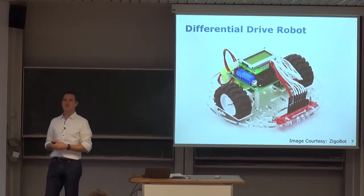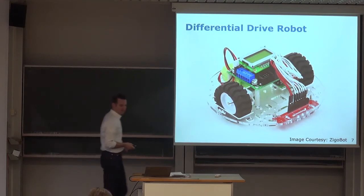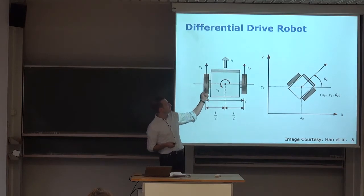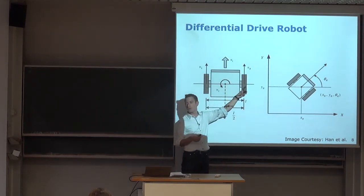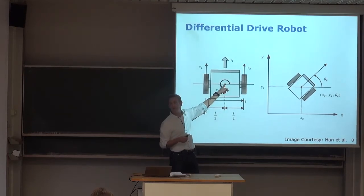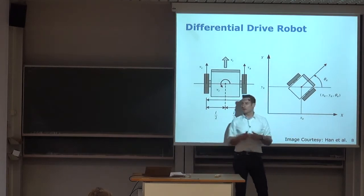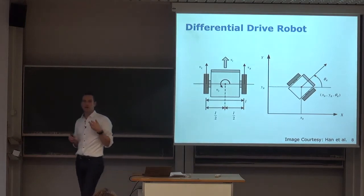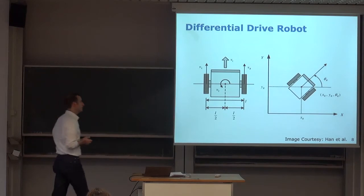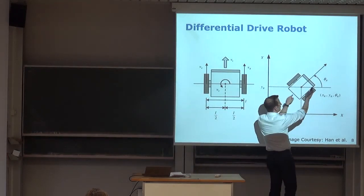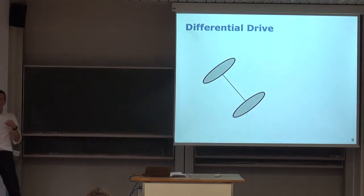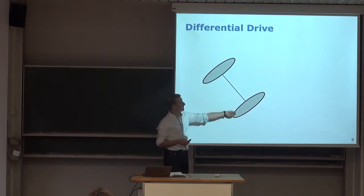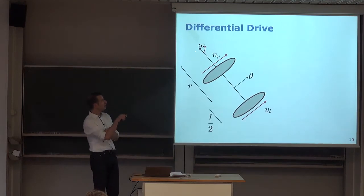The important thing is that the axes of both wheels coincide, so whatever motion command you give, the axes always meet at one point — the instantaneous center of curvature. In this illustration, we have the two wheels — right wheel and left wheel — and we can set their forward or backward velocity. We have a distance L between those two wheels; L/2 is typically the reference point for the platform, sitting in the middle of the axis. We describe the platform with three parameters: x, y, and orientation theta in an external coordinate system.